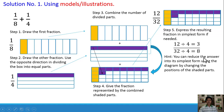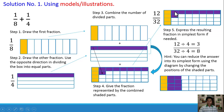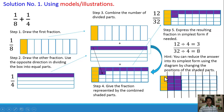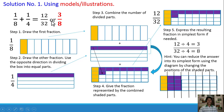There is a hint: you can reduce the answer into simplest form using the diagram by changing the positions of the shaded parts. There are 8 violet shaded parts. We transfer them and observe — there are 3 out of 8 parts, which is 3/8. That is how to reduce into simplest form using diagrams. Therefore, 1/8 plus 1/4 is equal to 12/32 or 3/8.